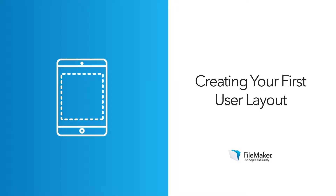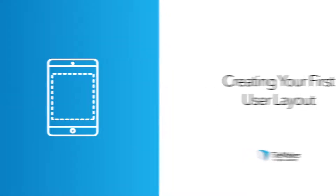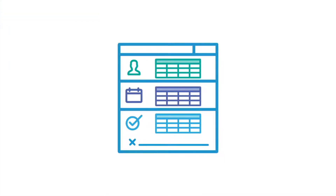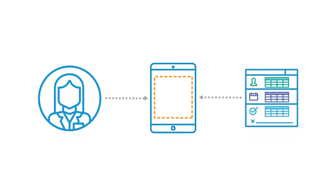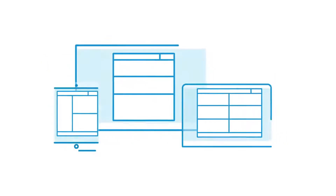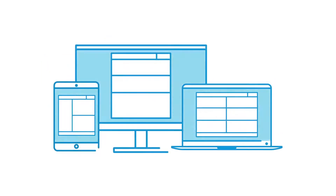Creating Your First User Layout. You've added data into your app. Now you'll need to design an interface for users so they can see it in a way that makes sense to them. You'll do this by creating a layout. A layout is a virtual service you use to create and design your app's interface. Your custom app can have several different layouts showing data in a variety of ways, or designed for users on different devices.